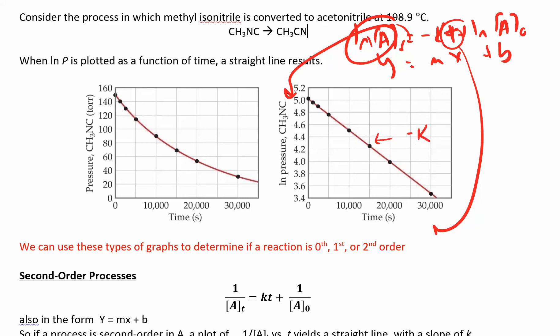So if you plotted just the concentration versus time, then you don't get a straight line. So here they're saying pressure instead of concentration. If it's a gas, it's going to be proportional. We can use these types of graphs, plotting concentration versus time, natural log of pressure versus time, in order to figure out do we have a zero, first, or second order reaction.